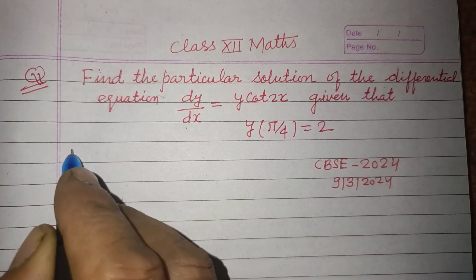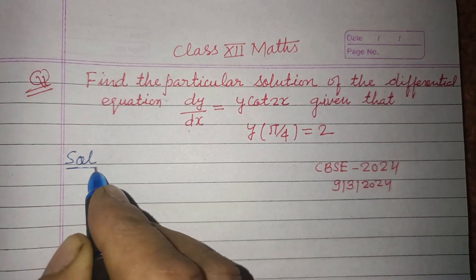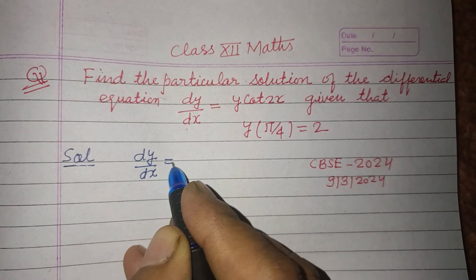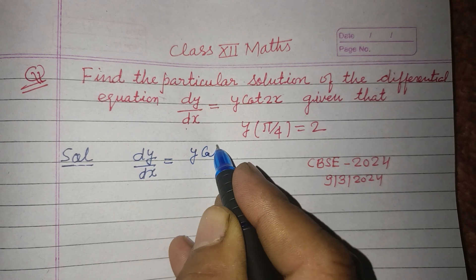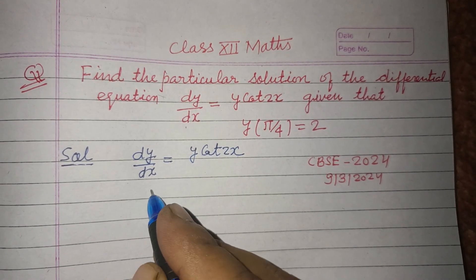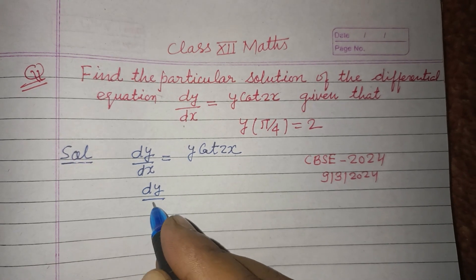So students, we have dy/dx equal to y cot 2x. Taking dy upon y equal to cot 2x dx.